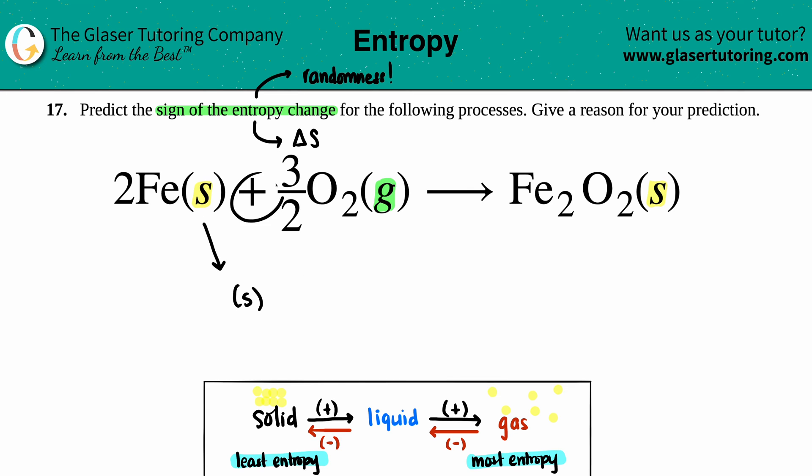Now in this case, we started off with a solid plus we started off with a gas, and we just went to something that was a solid. Since these states are different, we don't even care about how many we have. I don't care that there's two, there's three halves, or there's one of these.